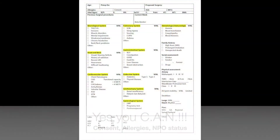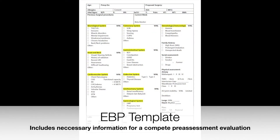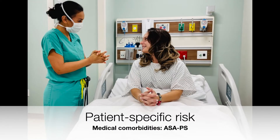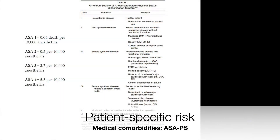Pre-anesthetic assessment should be done systematically, from head to toe, as shown in this template. As you go through your head-to-toe evaluation, you must recognize patient-specific risk as well as cardiac risk. Patient-specific risk for complications depends on the medical comorbidities. The ASA Physical Status Classification is a simple yet effective tool that has been utilized worldwide.